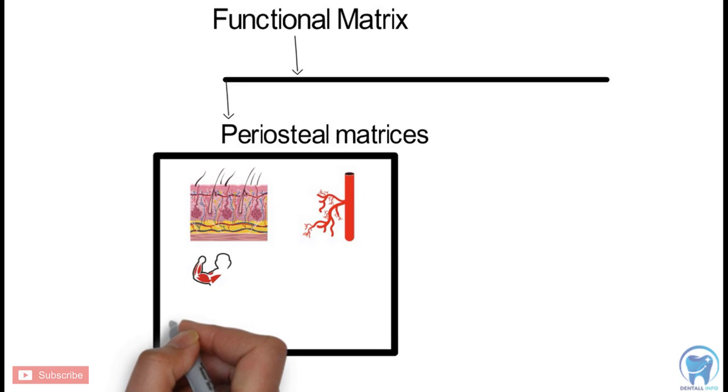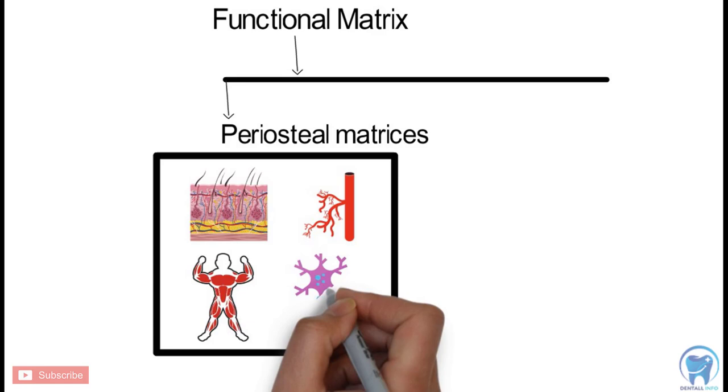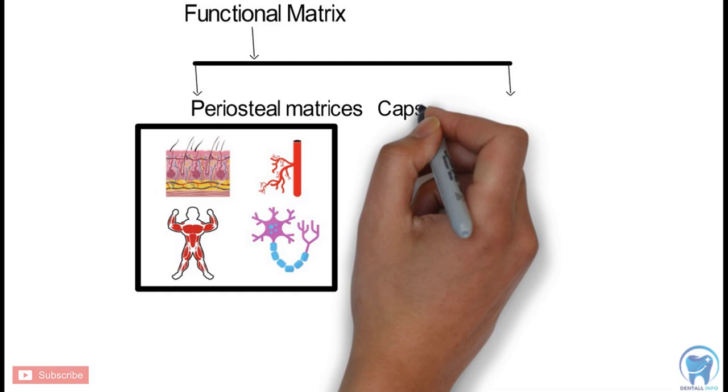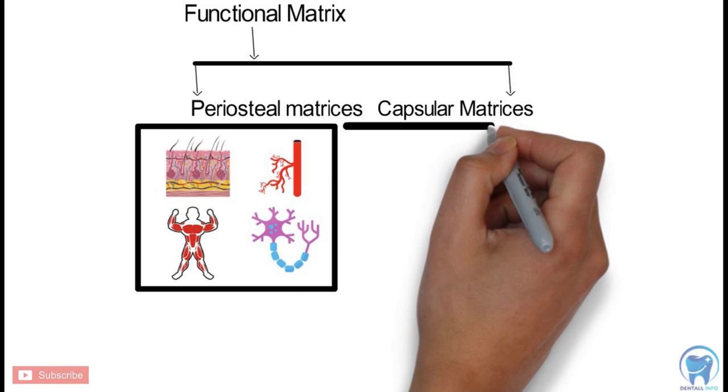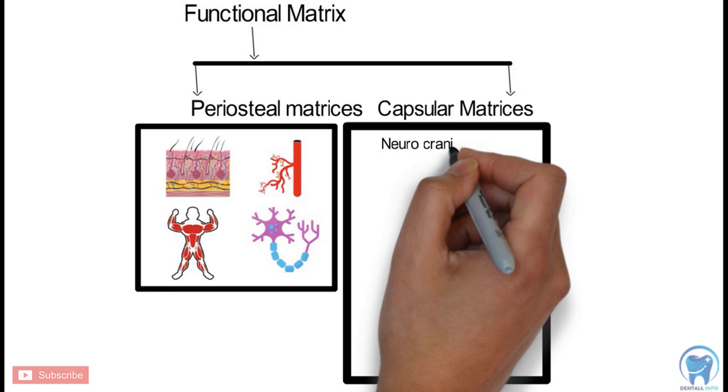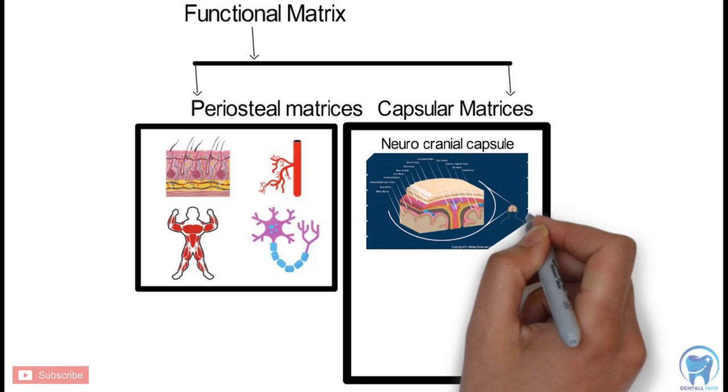And second is the Capsular Matrix. The Capsular Matrix are of two types. First is the Neurocranial Capsule which includes skin and dura matter. And the Orofacial Capsule which includes skin and mucosa.